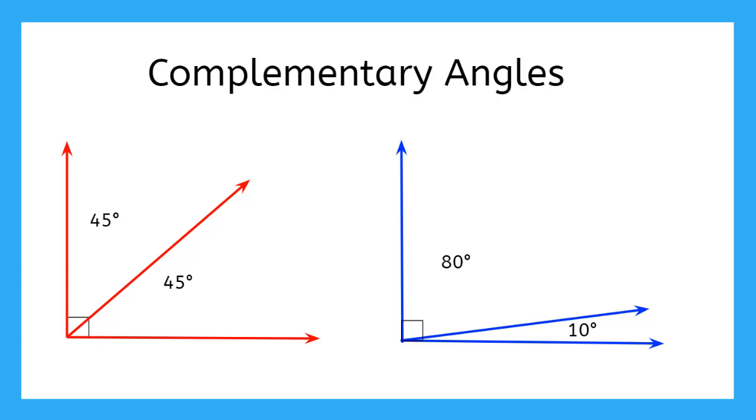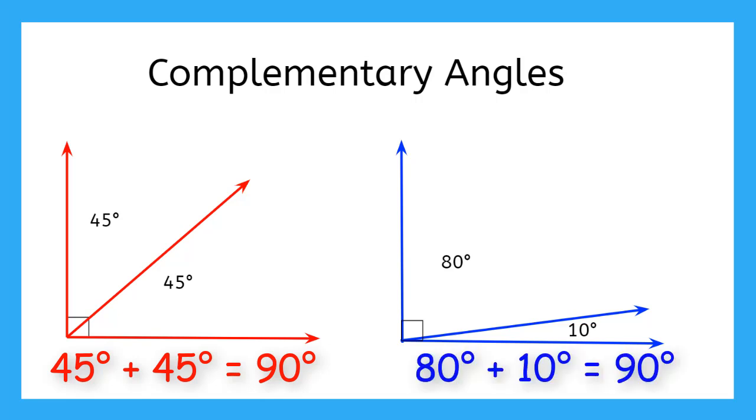Complementary angles are a pair of angles whose sum is 90. The red angle pair is made up of two angles. Both are 45 degrees. When added together, the sum is 90 degrees. The blue angle pair is made up of two angles. One is 80 degrees and the other is 10 degrees. These are also complementary angles since their sum is 90 degrees.